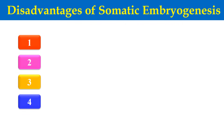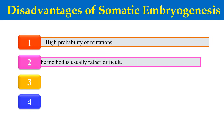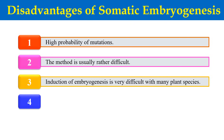Now, what are the disadvantages of this somatic embryogenesis technique? First is high probability of mutation — when we produce the embryo from somatic cells, there is high probability that mutation will occur in that embryo or in the plants formed from those embryos. The second disadvantage is that the method is difficult — it is not easy to make embryo from somatic cells. Also, in many species, the induction of embryogenesis is very difficult, and changing somatic cells into embryo is not straightforward.